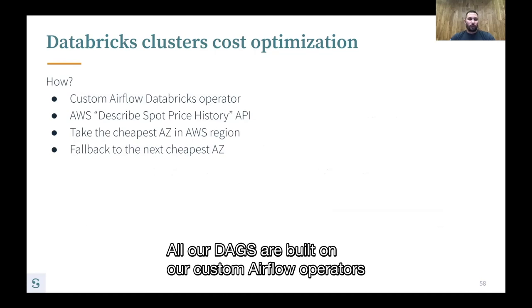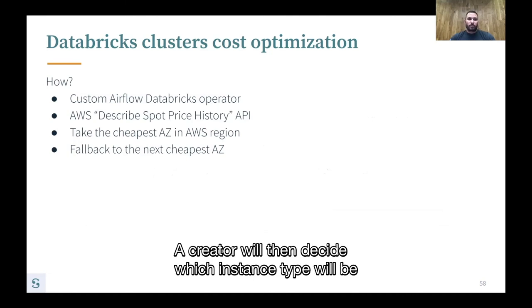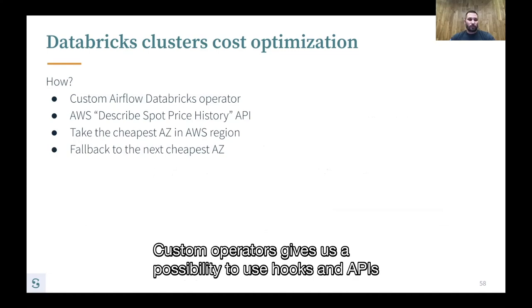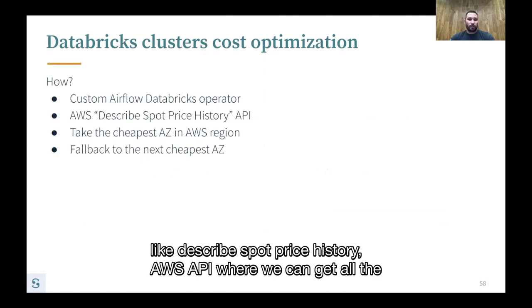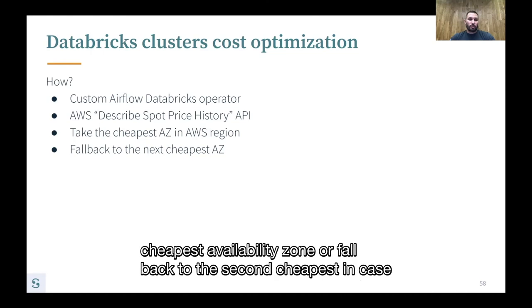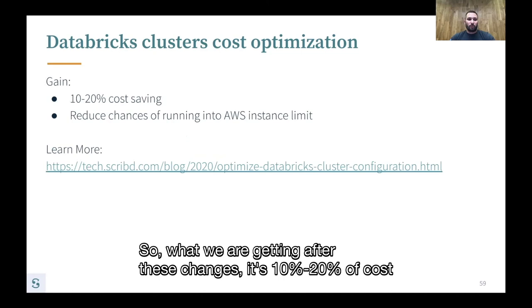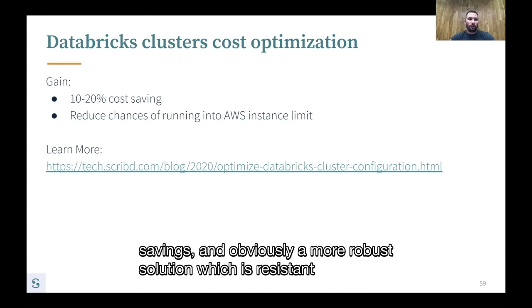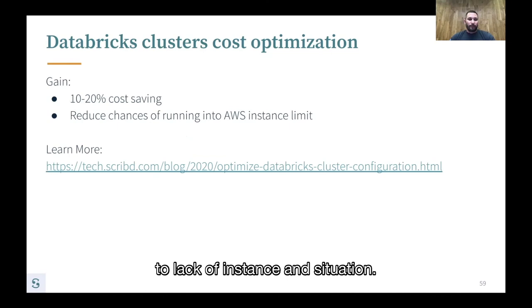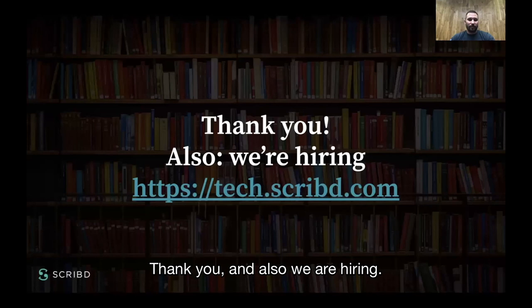All our DAGs are built on custom Airflow operators that work with Databricks. Users can set only the number of instances needed for the task, and the operator decides which instance type is the best choice. Custom operators give us the ability to use hooks and APIs like the EC2 Spot Price History AWS API, where we can get all availability zone prices across an AWS region — helping us select the cheapest availability zone or fall back to the second cheapest if AWS doesn't have the required number of instances. After these changes, we see 10 to 20 percent cost savings and a more robust solution resistant to the lack-of-instances situation. You can read about this in detail in our Script blog post. Thank you — and we are hiring!